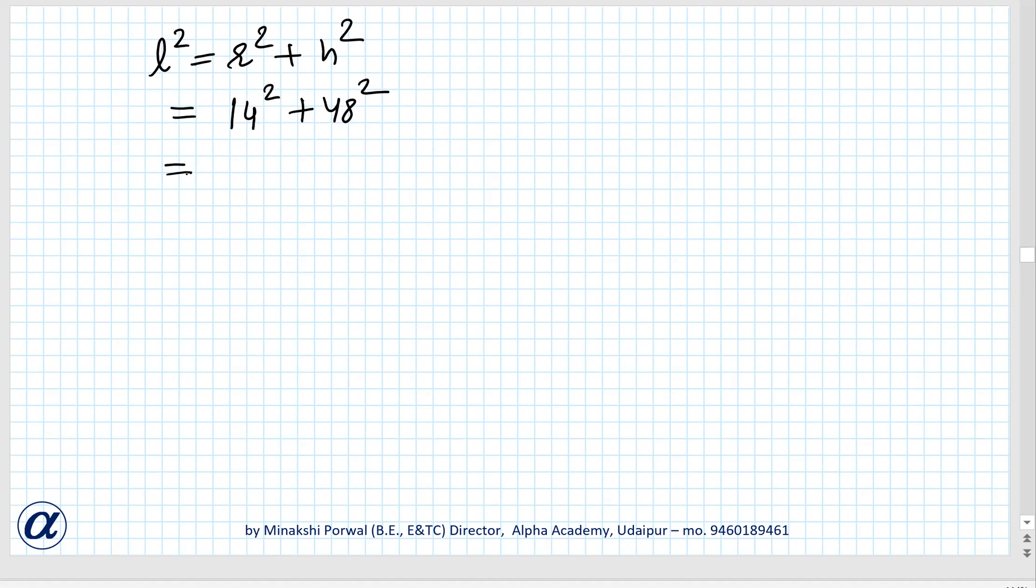So 14 is 196 and 48 into 48: 8 8s are 64, 6; 8 4s are 32 plus 6 is 38; 8 4s are 32; 4 4s are 16 plus 3 is 19.